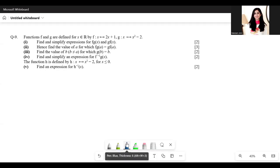This question says the function f and g are defined for x is an element of real numbers, where f equals 2x plus 1 and g equals x squared minus 2.